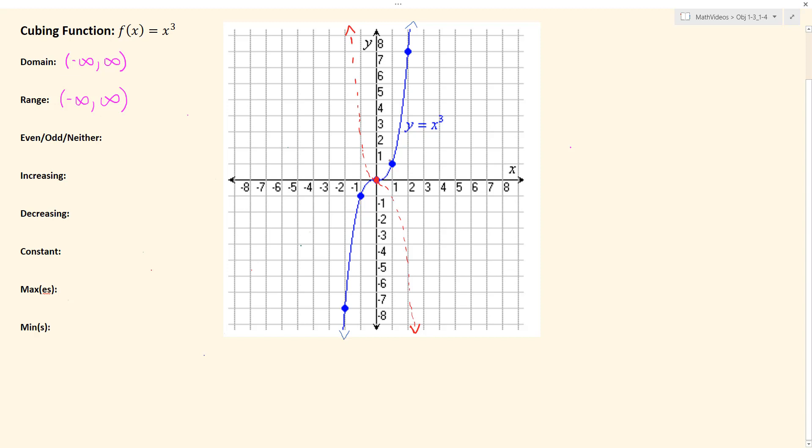So if you start with your graph of f(x) equals x cubed here in blue, and you reflect it across the y-axis, which has already been done by this dashed line here in red, and then take that graph and reflect it across the x-axis as well,